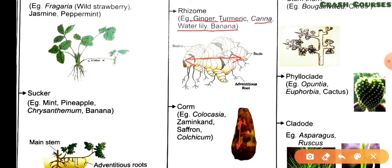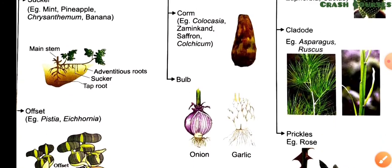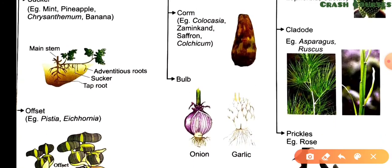Now for corm: examples of corm are Colocasia, Zaminkand, saffron, and Colchicum. Now coming to the next type, that is bulb. In bulb, the stem is highly reduced and disc-like, and is surrounded by a number of fleshy leaves. Bulbs are found in onion and garlic.